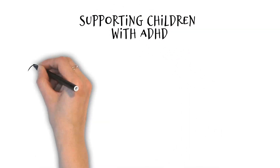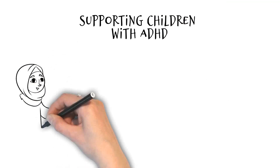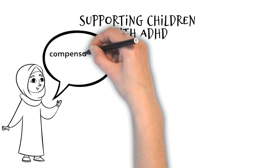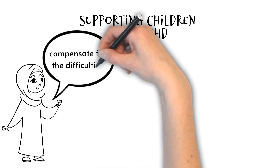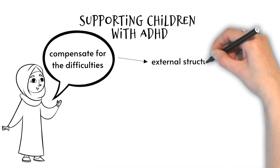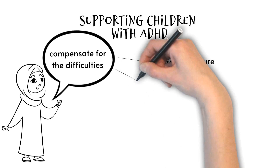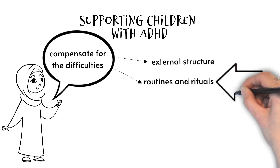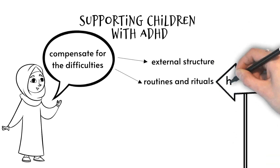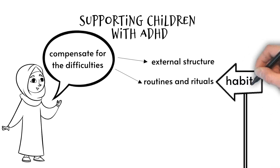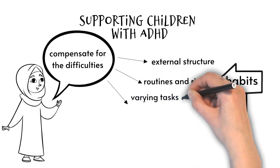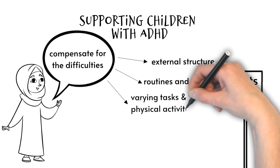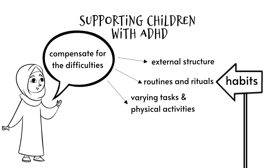So how can we support children with ADHD? A useful approach is to compensate for difficulties holding structured plans in mind by providing additional external structure in the classroom and at home. Embedding regular routines and rituals in classroom and home activities helps children develop habits they can use to control their behaviour. Change can be very distracting for people with ADHD, and regular routines allow children to anticipate what to expect next. Varying tasks and providing opportunities for physical activity can also help give children's attention a break.